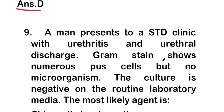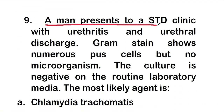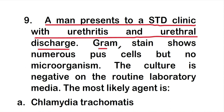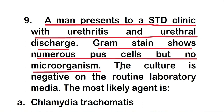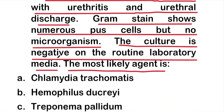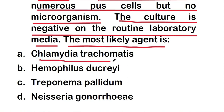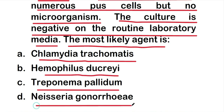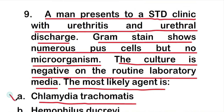Question 9: A man presents to an STD clinic with urethritis and urethral discharge. Gram stain shows numerous pus cells but no microorganisms, and the culture is negative on routine laboratory media. The most likely agent is — Chlamydia trachomatis, Haemophilus ducreyi, Treponema pallidum, or Neisseria gonorrhoeae? The right answer is option A: Chlamydia trachomatis.